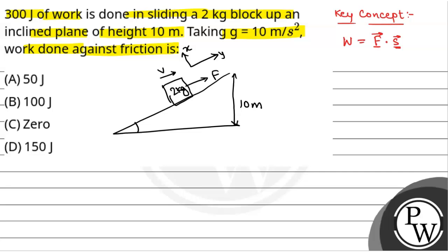If this angle is theta, then the weight mg acts downward. Perpendicular to the incline it will be mg cos theta, and parallel to the incline it will be mg sin theta, where m is 2 kg. Since the velocity is upward along the incline, kinetic friction fk will act down the incline.